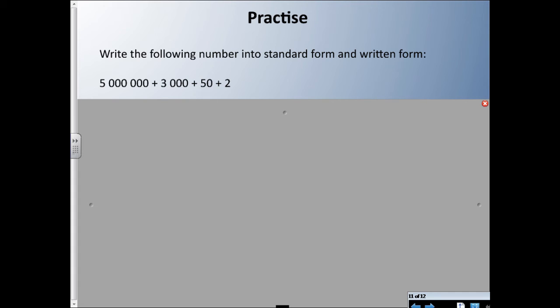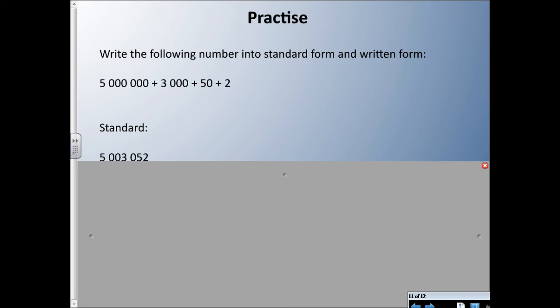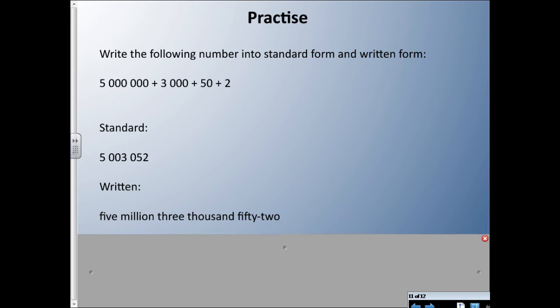Let's do another one. This time I have it in expanded form and I'd like you to write it in standard form and written form. Pause if you want to take a guess. In standard form, the answer is five million three thousand fifty-two. There are missing spots — no hundred-thousands, ten-thousands, or hundreds — and when that happens we just write a zero. In written form: five million three thousand fifty-two.